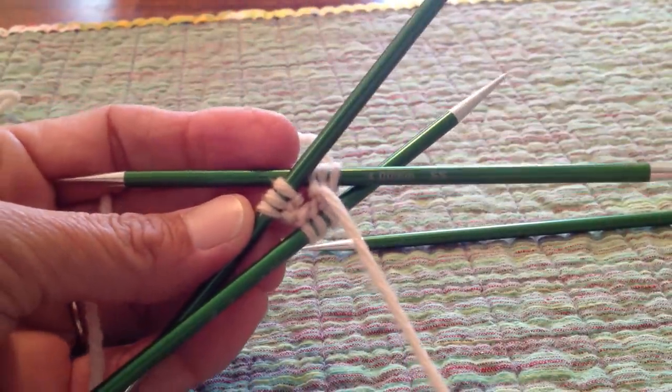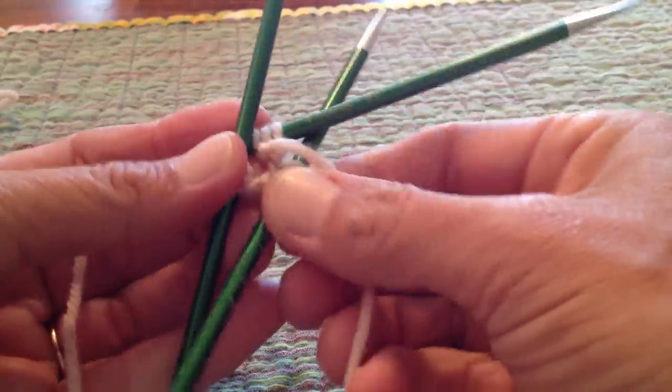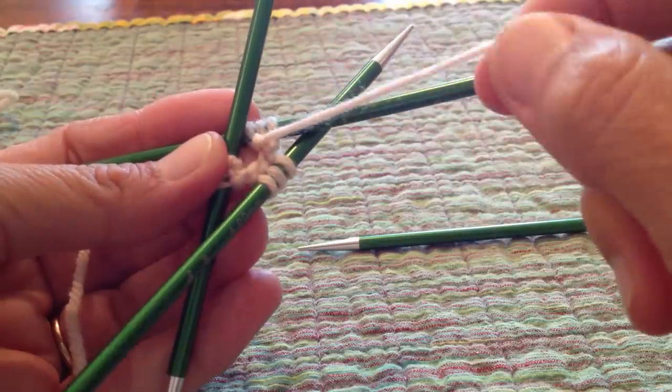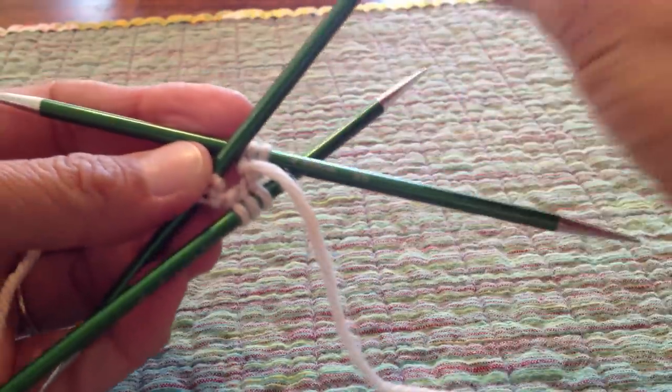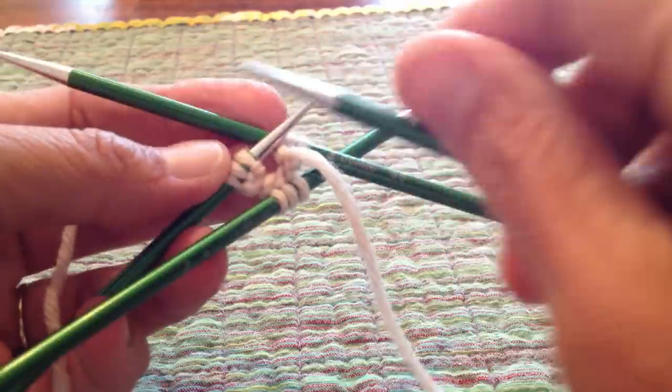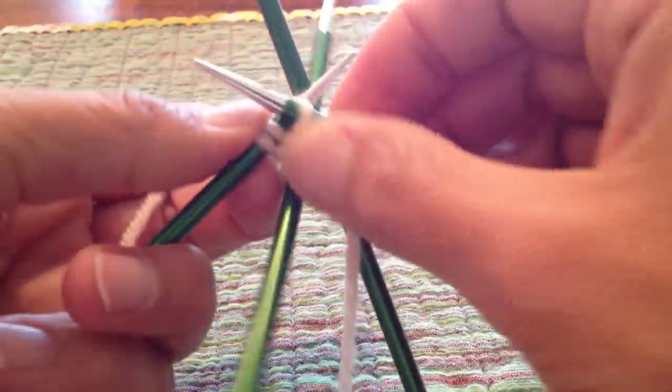I have three stitches on each needle, and they're all set to go right in the round. They're not twisted or anything, right in a row. I'll just take my fourth double-pointed needle here and start knitting in the round.